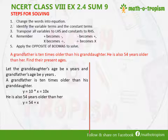From these two equations, we can see that the grandfather's age Y is going to remain the same. So we can take both the right-hand sides of the two equations and solve them. So 10X is equal to 54 plus X. We have changed the words into equations and are going to simplify.